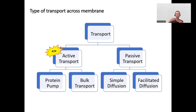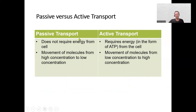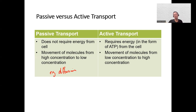Next, we're going to talk about types of transport. Transport can be separated into two categories: active transport, which requires ATP, and passive transport, which does not require ATP. Passive transport involves movement of molecules from high concentration to low concentration — diffusion is an example. Active transport requires ATP from the cell and moves molecules from low concentration to high concentration.